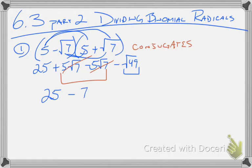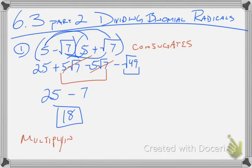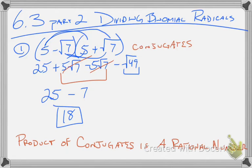I'm left with 25, and this becomes minus the square root of 49. The square root of 49 is 7, so 25 minus 7 becomes 18. The product of conjugates is a rational number — when I multiply conjugates together, there are no more radicals, because the two in the middle canceled out and the one on the end became a perfect square. And that's key for dividing these binomial radicals.